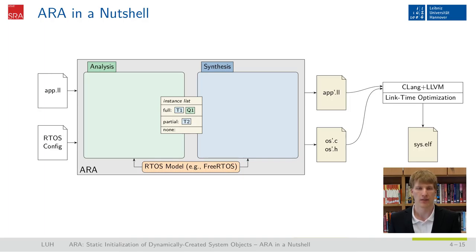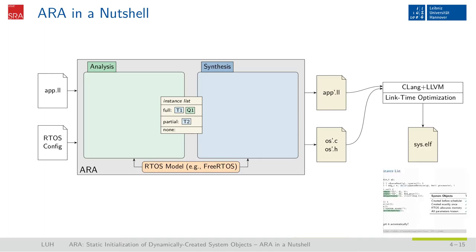The instance list is then used during the synthesis phase to statically generate system objects and provide specialized system call implementations. The output of the ARA system optimizer — consisting of the modified application as LLVM intermediate code and the newly generated operating system objects and functions as C code — is fed back into the usual compiler toolchain to apply link-time optimization and produce the system image.